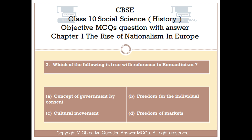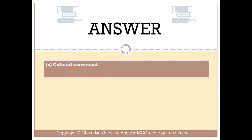Question number 2. Which of the following is true with reference to Romanticism? Option A: concept of government by consent. Option B: freedom for the individual. Option C: cultural movement. Option D: freedom of markets. The right answer is Option C — cultural movement.